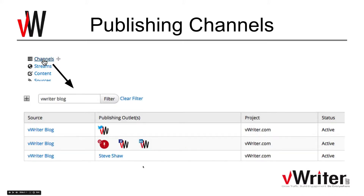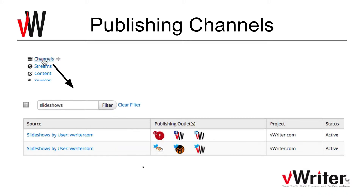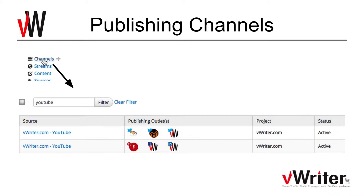The next couple of channels are set up using my SlideShare RSS feed. On the SlideShare website you find the feed for your account - my account name is vwriter.com. Based on that SlideShare feed, it will publish to Pinterest, Facebook, and LinkedIn. I've also got multiple tweets going out to the vWriter Twitter feed, and also a couple of other Twitter feeds - there's no reason why you can't add more than one Twitter account to your publishing channel. So that's the SlideShare channel. The next one is for YouTube.